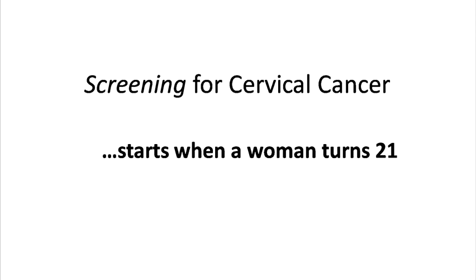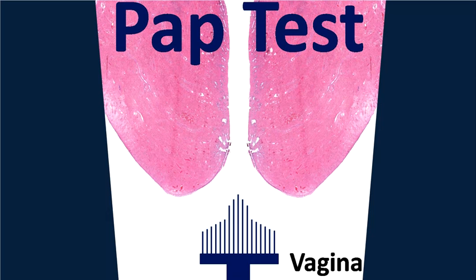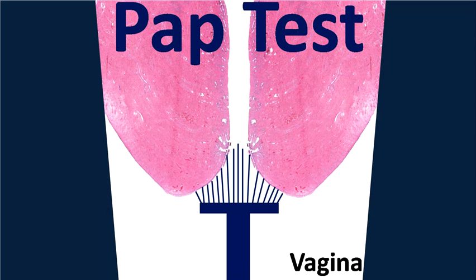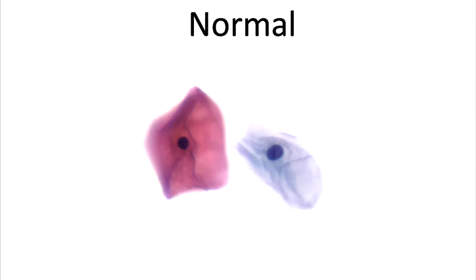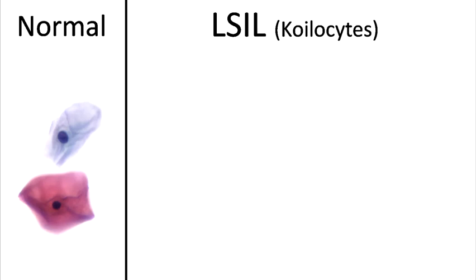Routine screening for cervical cancer involves a pap test and usually begins at age 21 for most women. A pap test involves collecting cells from the cervix and examining these cells with a microscope. On a pap test, normal cells have small round nuclei and lots of cytoplasm.